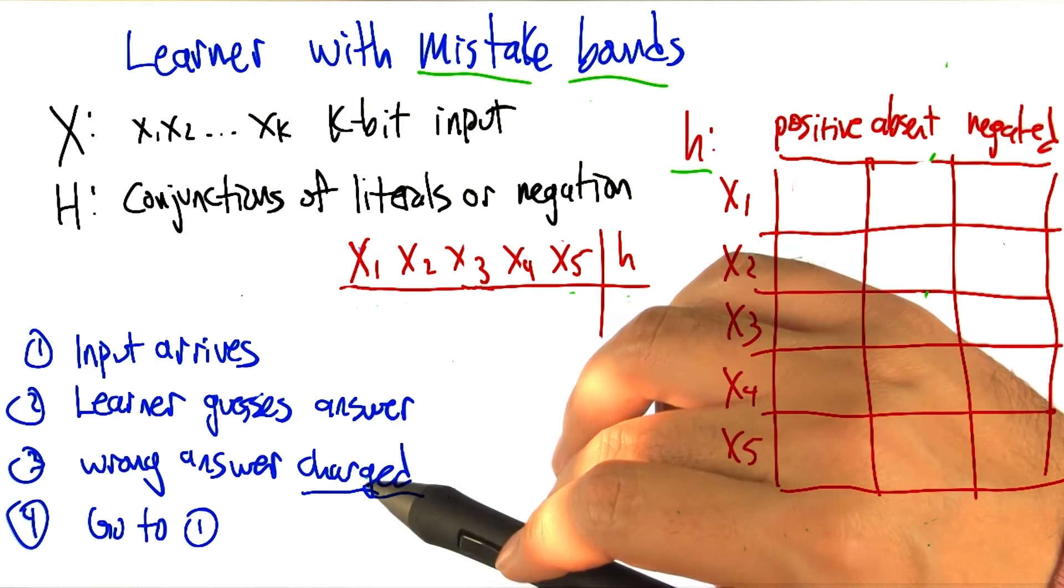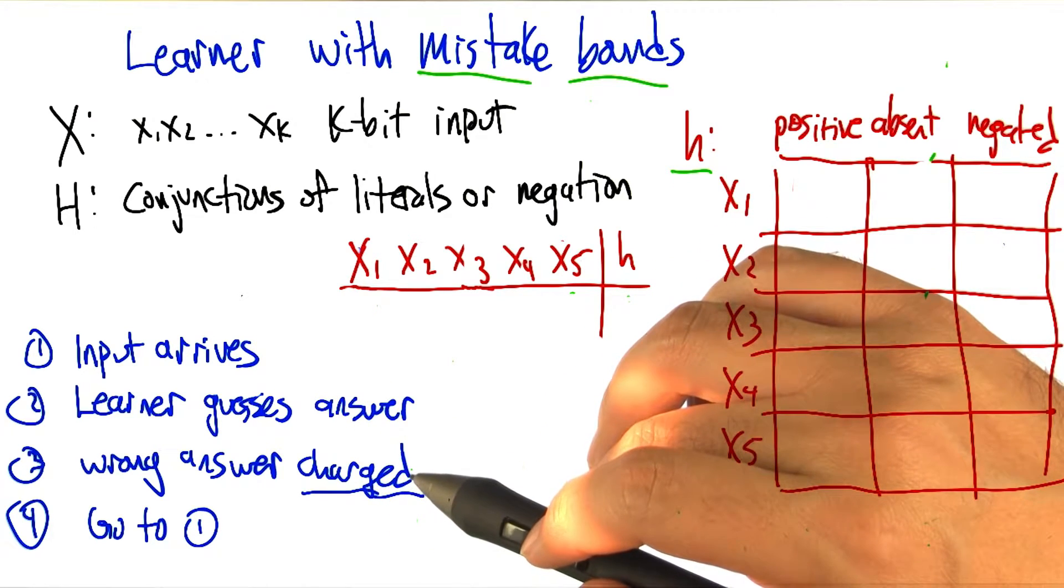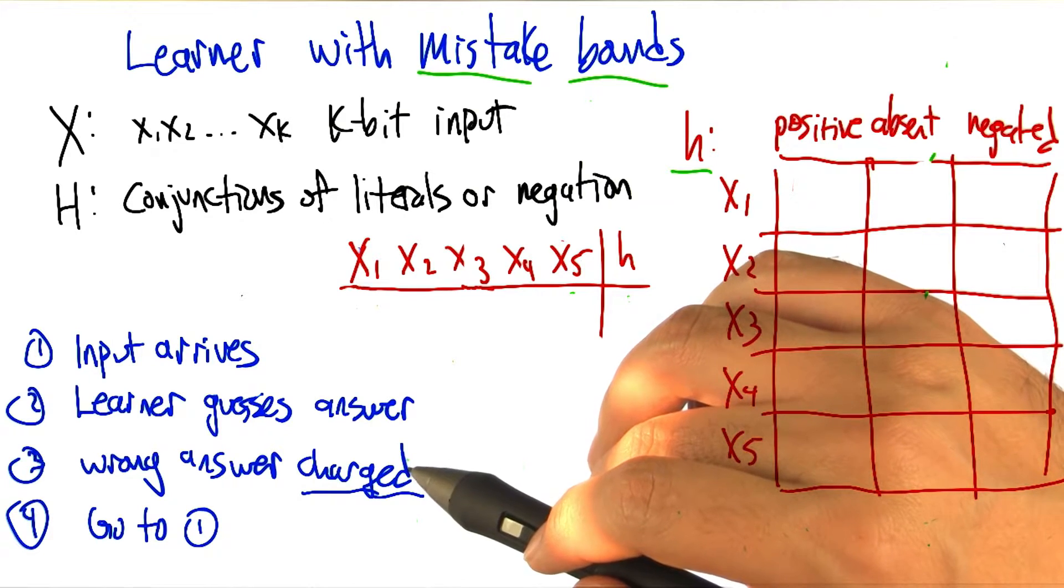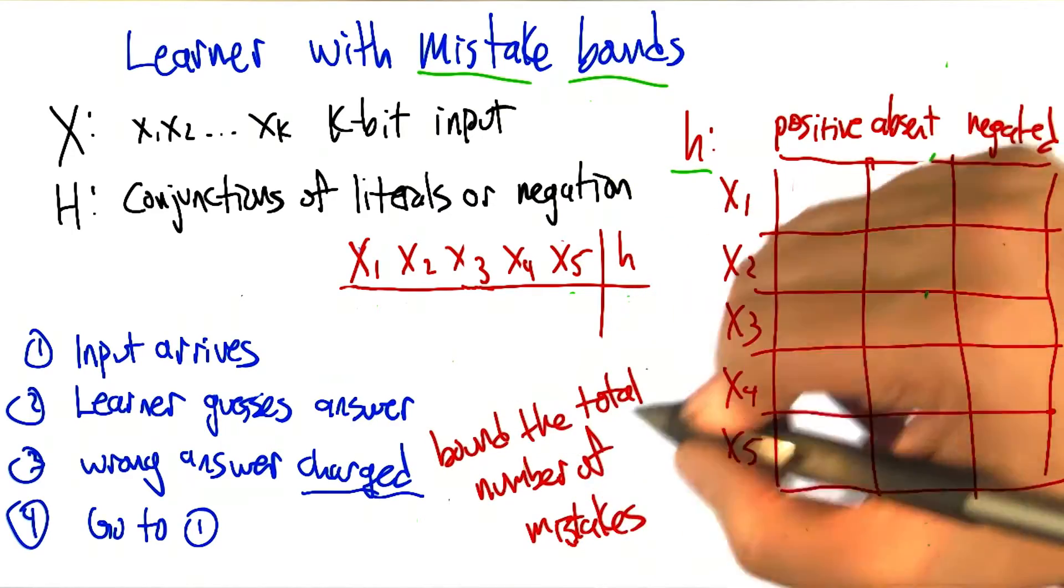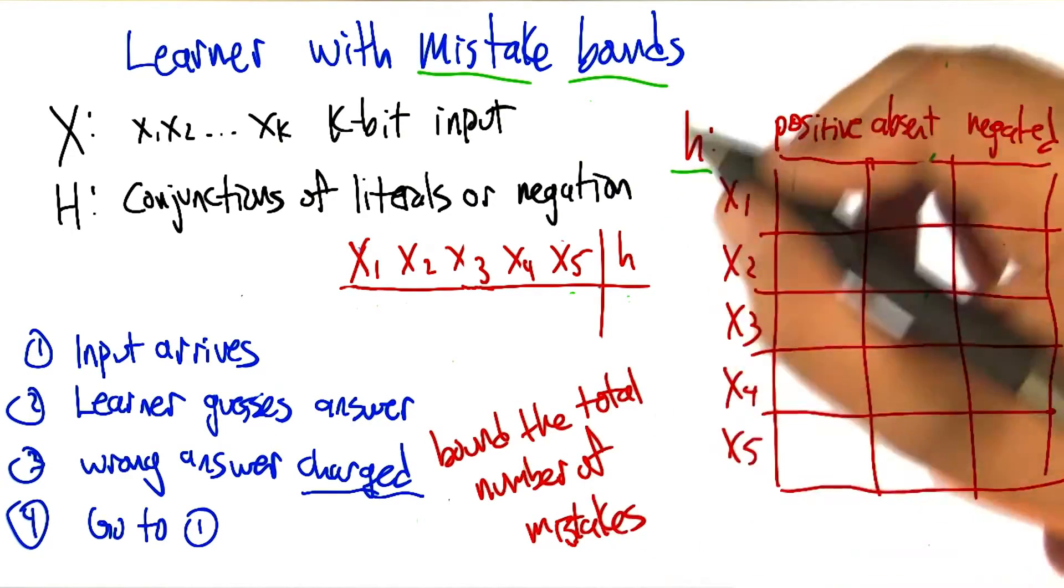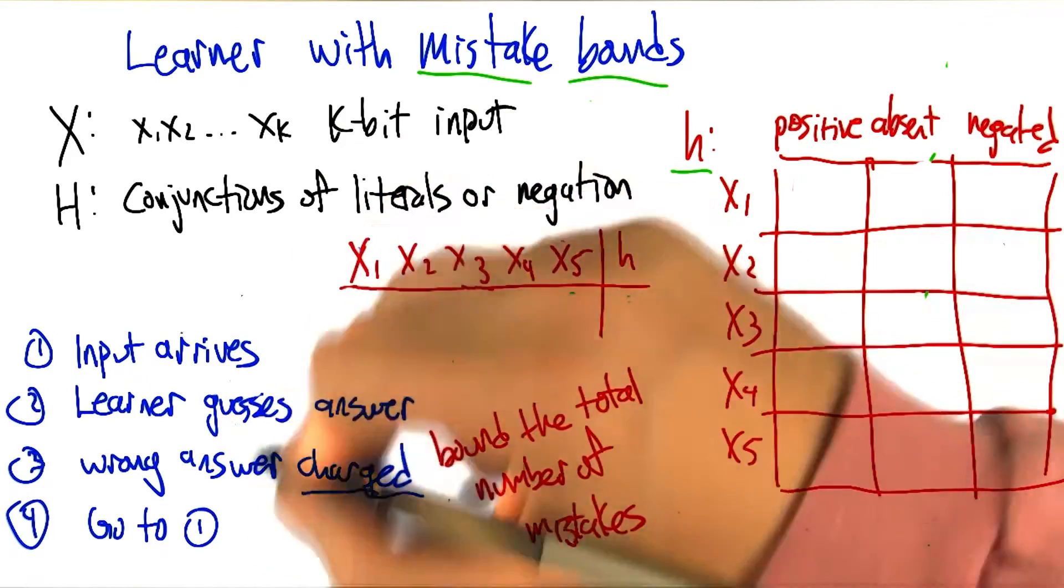If the learner's wrong, then we're going to charge it a point and tell it that it was wrong. And then it goes up to one. And we repeat this. And so this is going to run forever. And what we're going to do is bound the total number of mistakes made into infinity.